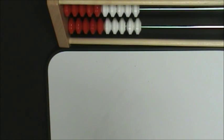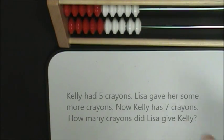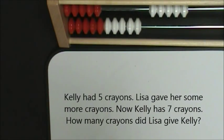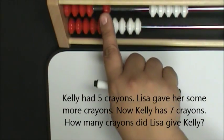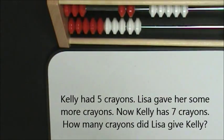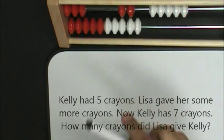Another way the Reckon Rec can be used is to find the missing addend. Let's look at this word problem. Kelly had five crayons. Kelly has seven crayons at the end of the story: five, six, seven. That means that Lisa gave her two crayons.